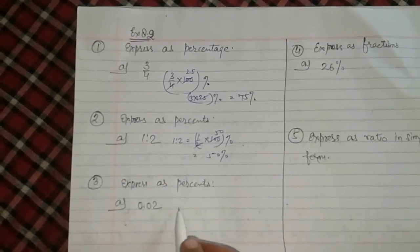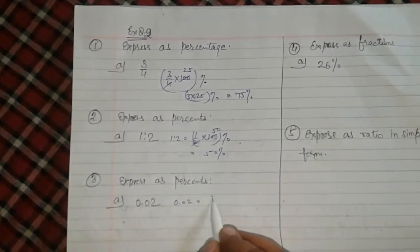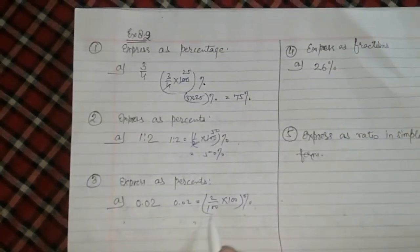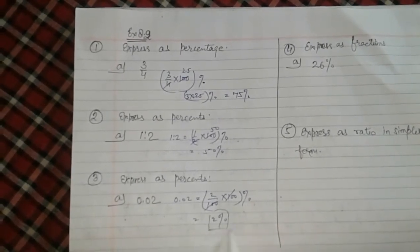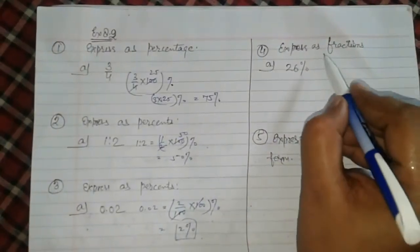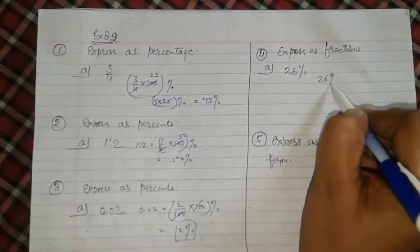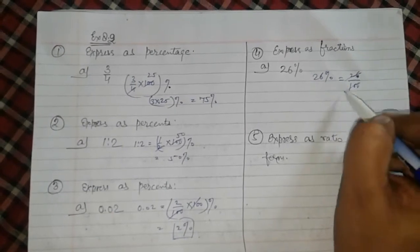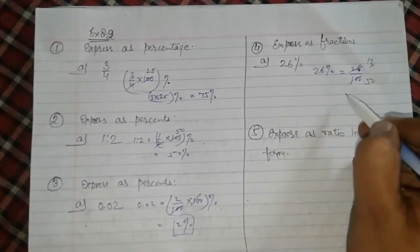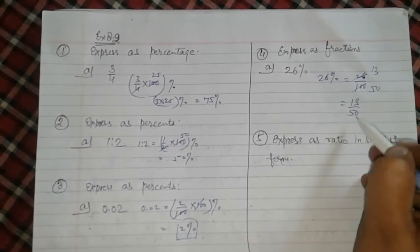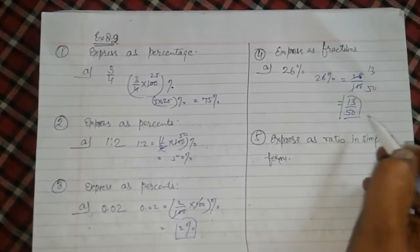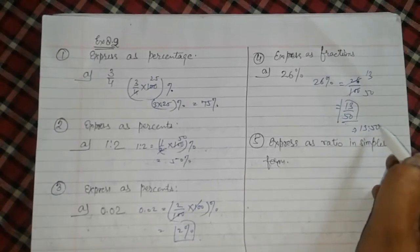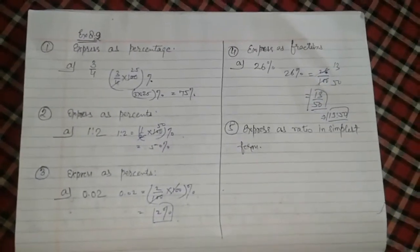Now again, convert to fraction at first. 0.02 equal 2 upon 100. Converted to percentage with same method. 100 divided by 100, 2%. Now, express as fraction. 26% equal 26 upon 100. The GCF is 2. So it is 13 and it is 50. 13 upon 50 is the answer. If it is written in ratio, 13 ratio 50.